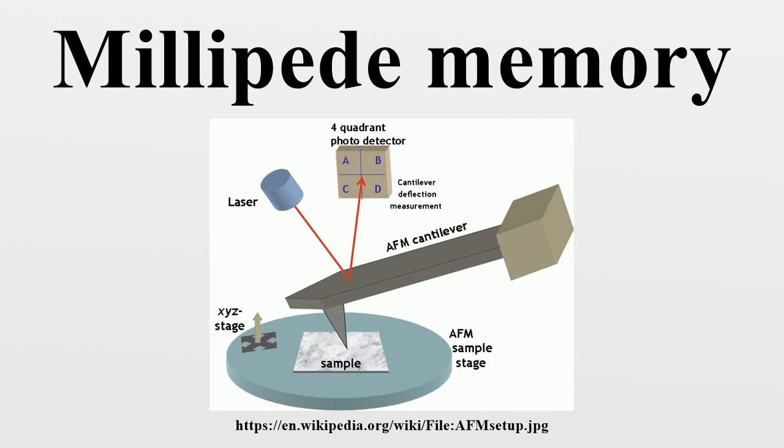Millipede memory is a non-volatile computer memory stored on nanoscopic pits burned into the surface of a thin polymer layer, read and written by a MEMS-based probe. It promised a data density of more than 1 terabit per square inch, which is about the limit of perpendicular recording hard drives.